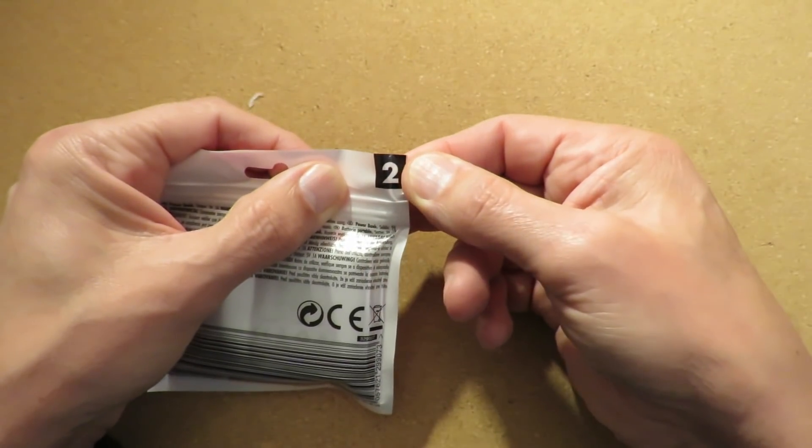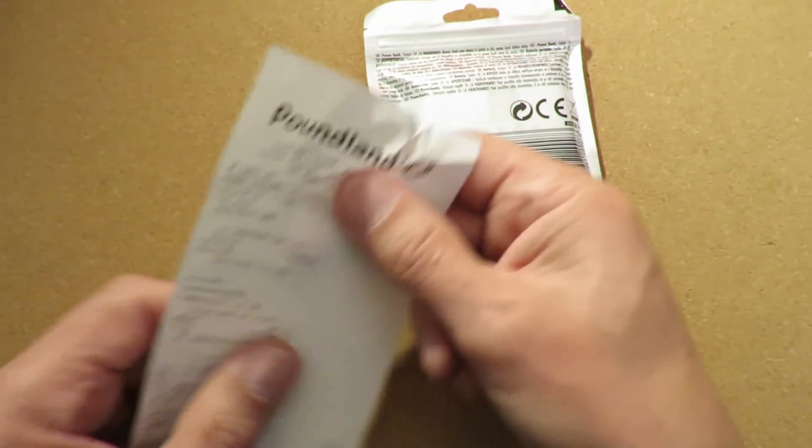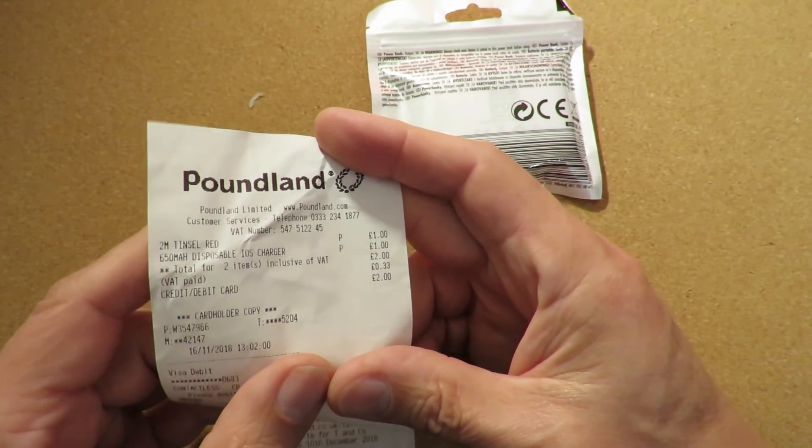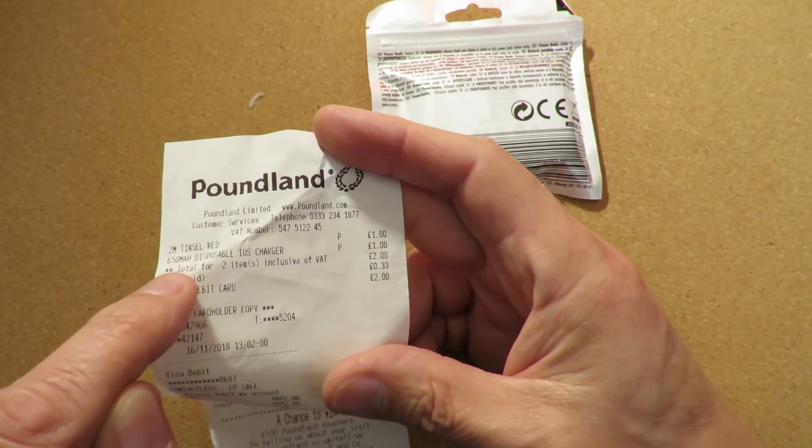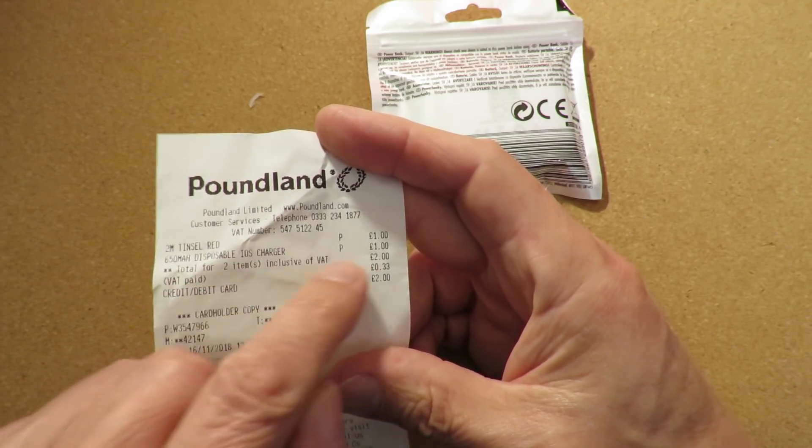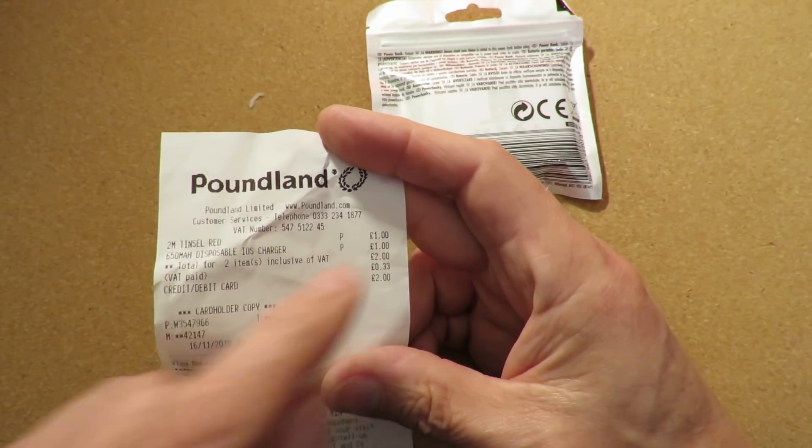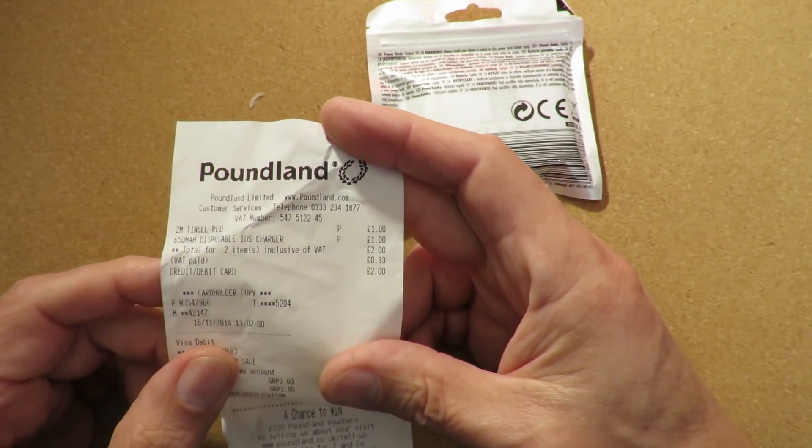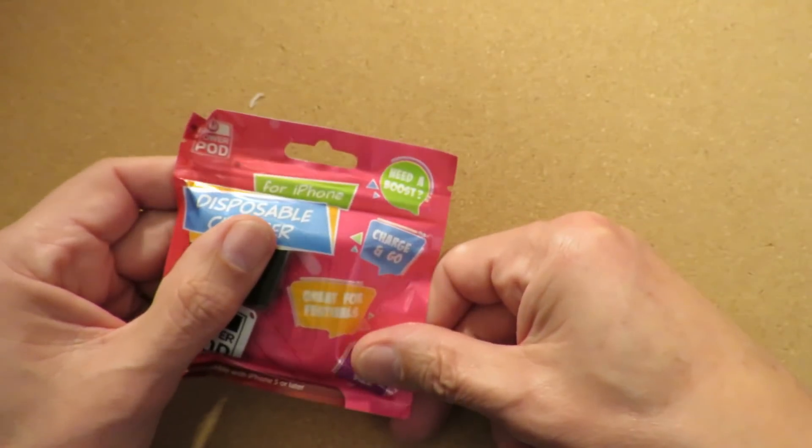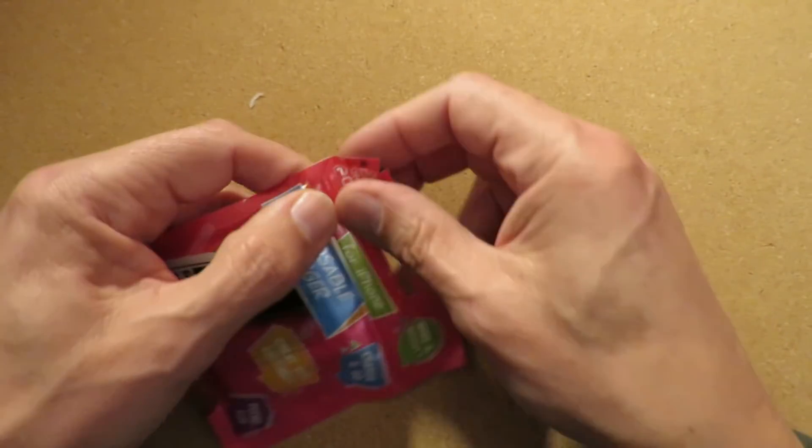They're supposed to be two pounds in Poundland. But when I put it through the machine, 650mAh disposable iOS charger, one pound. So I thought, winner. So this only cost me a pound, not two pounds.